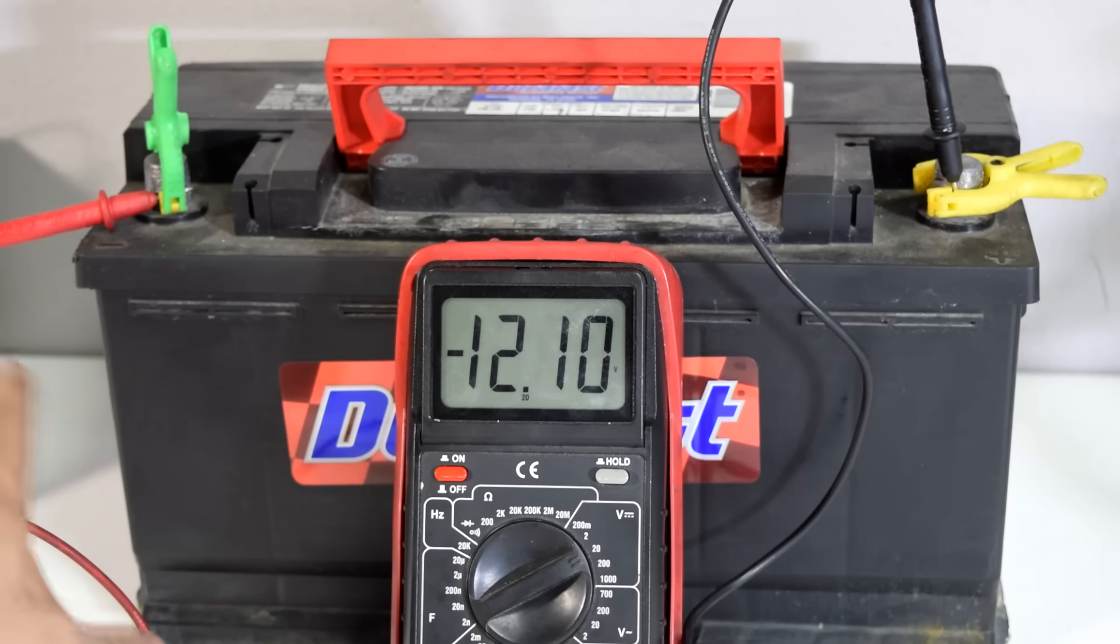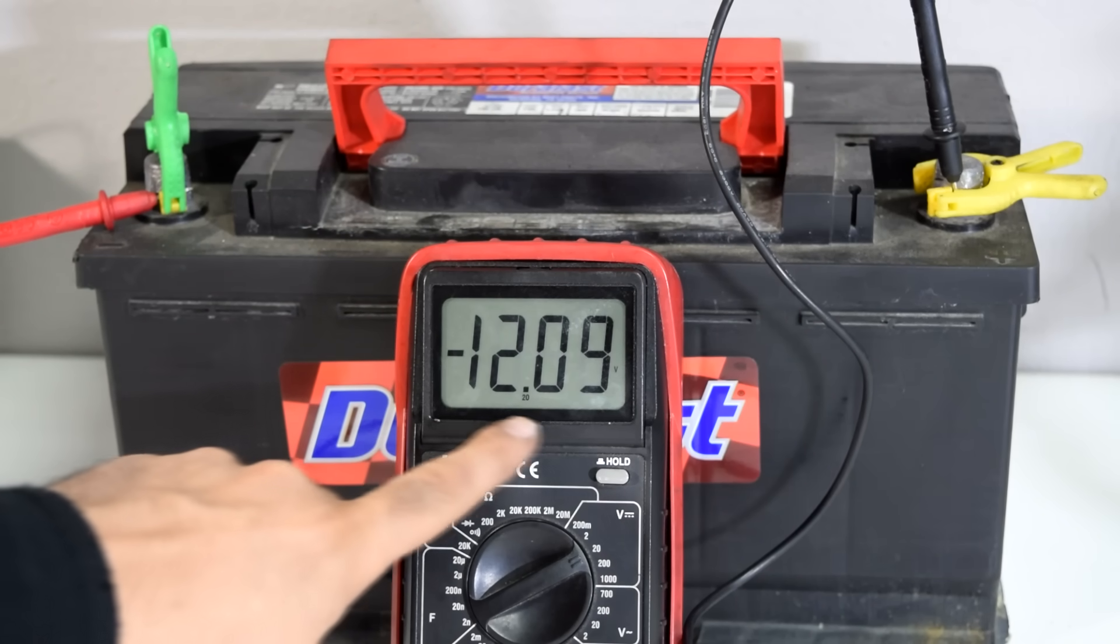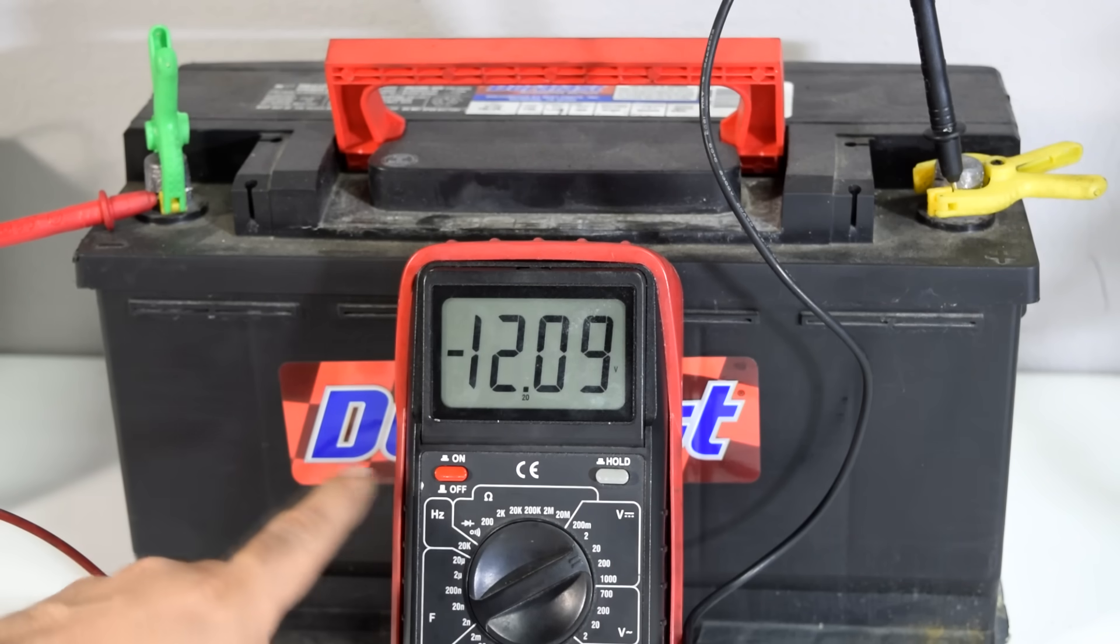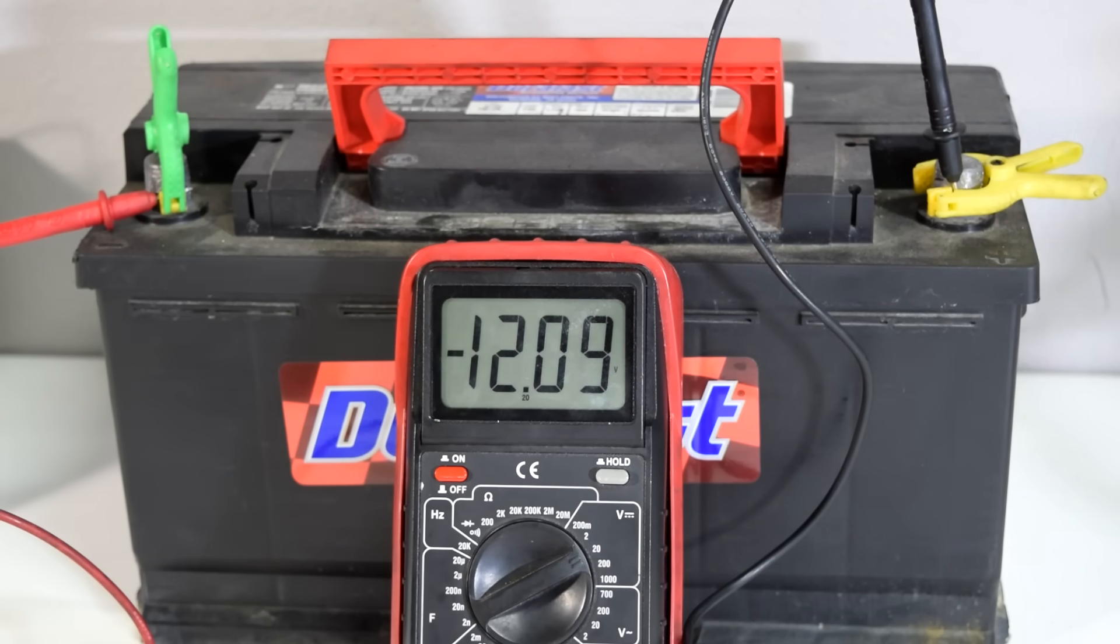Now if you ever hook up your test leads the wrong way, you're going to see this negative sign next to your voltage reading like we got here. Now this doesn't hurt the multimeter and it's actually a pretty decent way of finding your positive and negative side of your circuit.